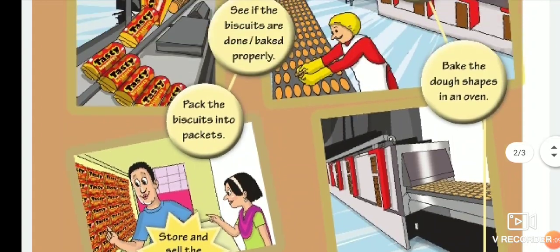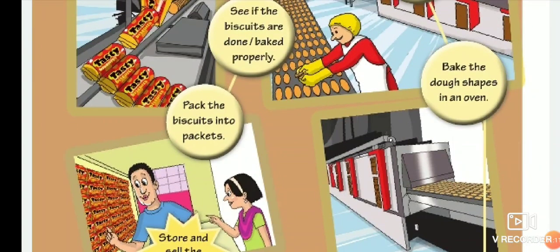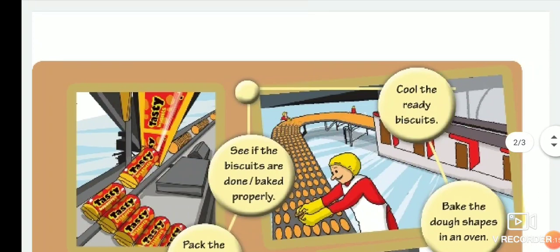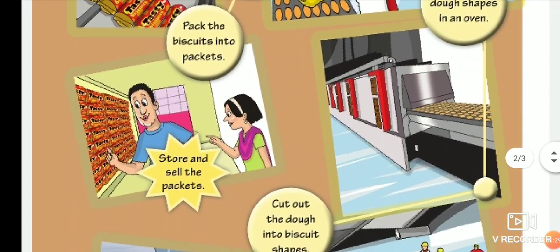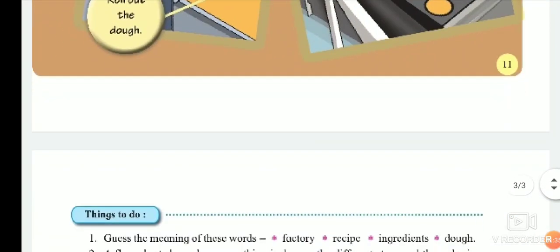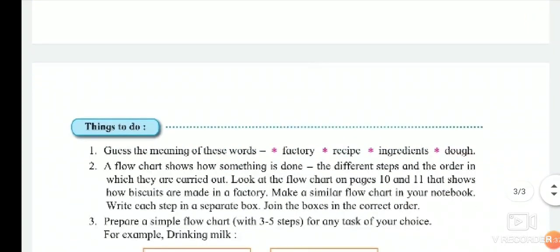Next, cut out the dough into biscuit shapes. Next, bake the dough shapes in an oven. Next, cool the ready biscuits. Next, see if the biscuits are done or baked properly. Next, pack the biscuits into packets. Then store and sell the packets.